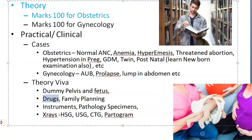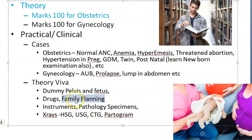For drugs and family planning, they will show you oxytocin and ask how many units are in one ampoule - it could be five or ten international units. They will also show you misoprostol and ask what you use it for: cervical ripening or MTP. They can give you a copper T and ask you to identify OC pills like Mala-N and Mala-D.